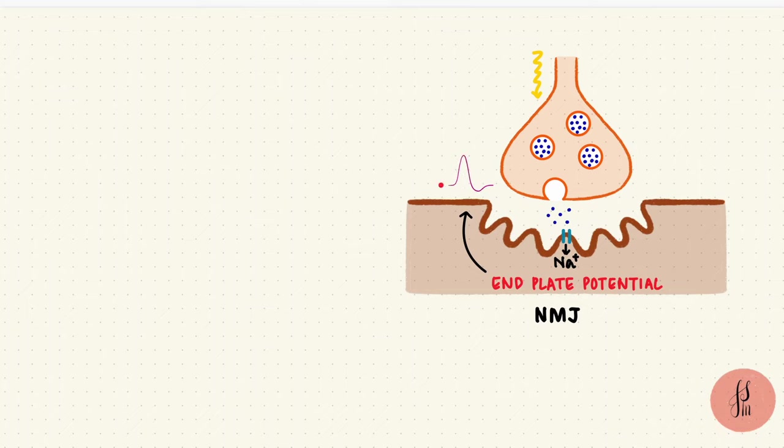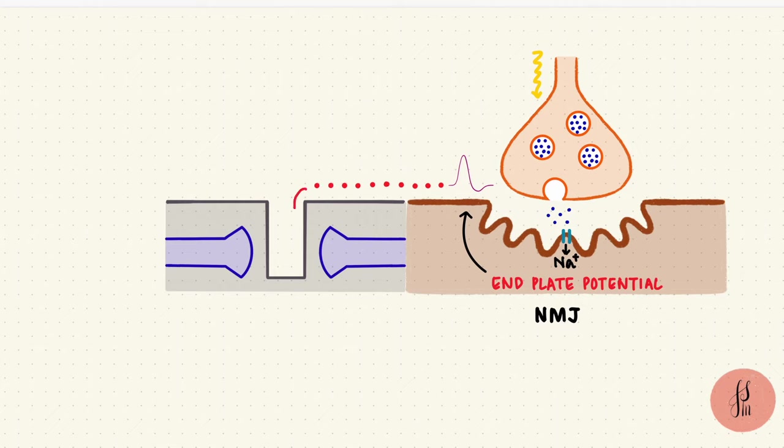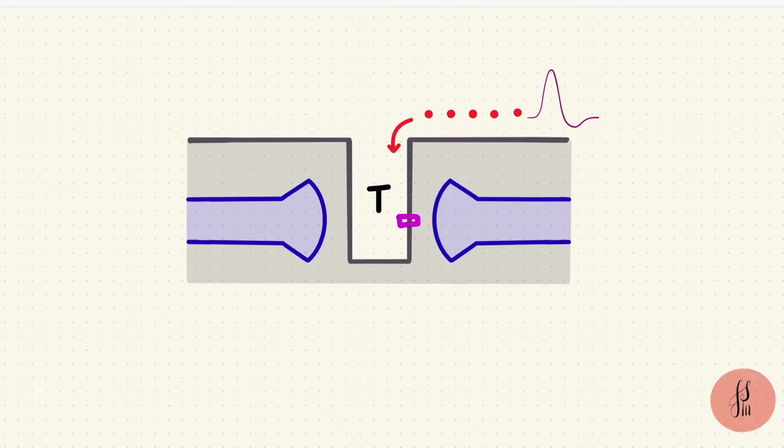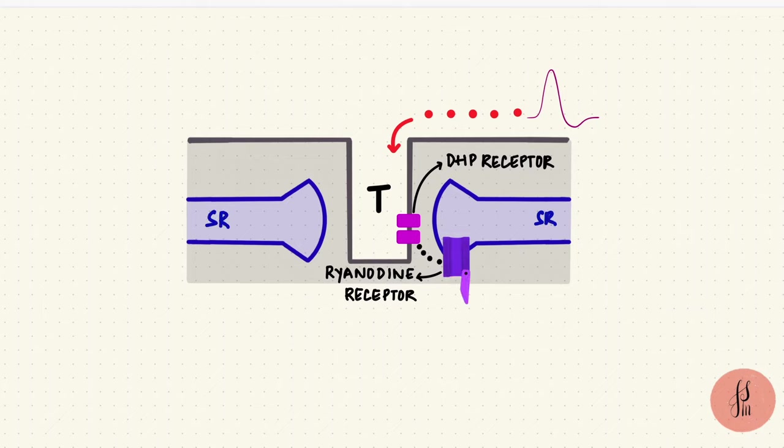The action potential propagates along the membrane and down the T tubules, which are dips from the membrane. That stimulates a dihydropyridine receptor, which is a calcium channel. This channel is mechanically coupled to a ryanodine receptor on the surface of the sarcoplasmic reticulum. When that channel opens, the stored calcium exits the sarcoplasmic reticulum and the intracellular calcium rises.